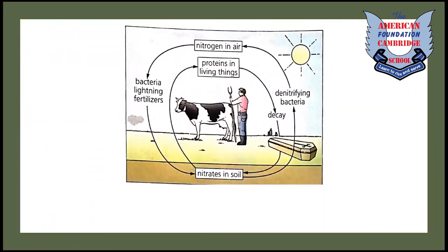Let's move towards the nitrogen cycle. It is basically the series of processes by which nitrogen and its components are interconverted in the environment and in living organisms, including nitrogen fixation and decomposition. For example, when a human body dies, denitrifying bacteria convert the nitrogen from nitrates in the soil into the atmosphere. Similarly, nitrogen-fixing bacteria fix that nitrogen released by denitrifying bacteria back into the atmosphere.